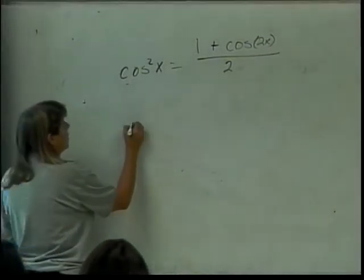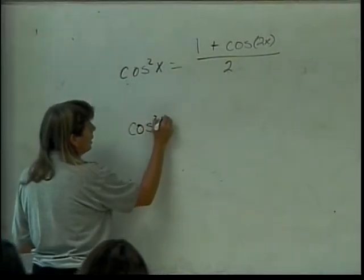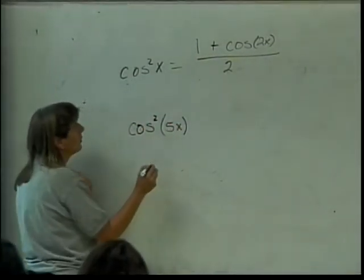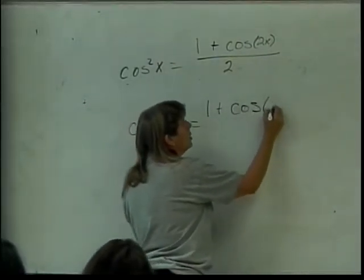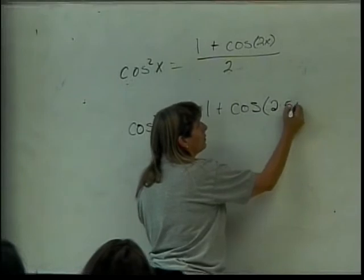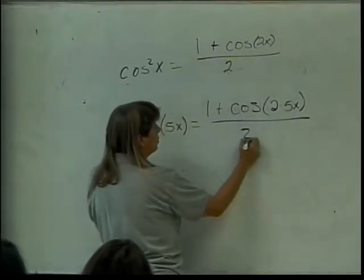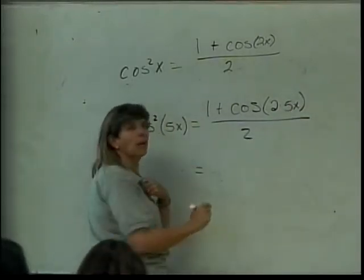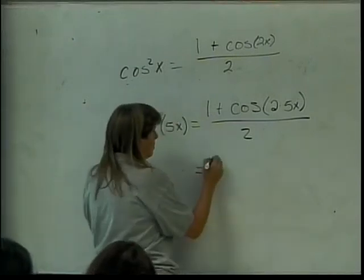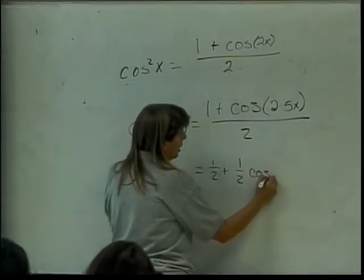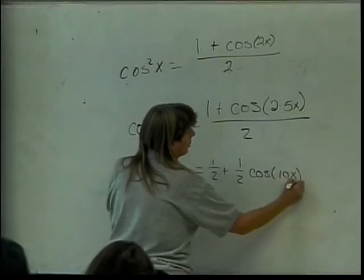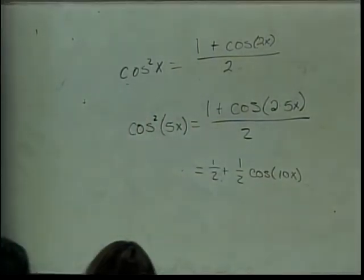So, for my cosine squared of 5x, that's going to be 1 plus the cosine of 2 times 5x divided by 2, which turns out, since I have to break it up into pieces, to be 1 half plus 1 half cosine of 10x. And so, you would put in 1 half, 1 half and 10, into each of the blanks.